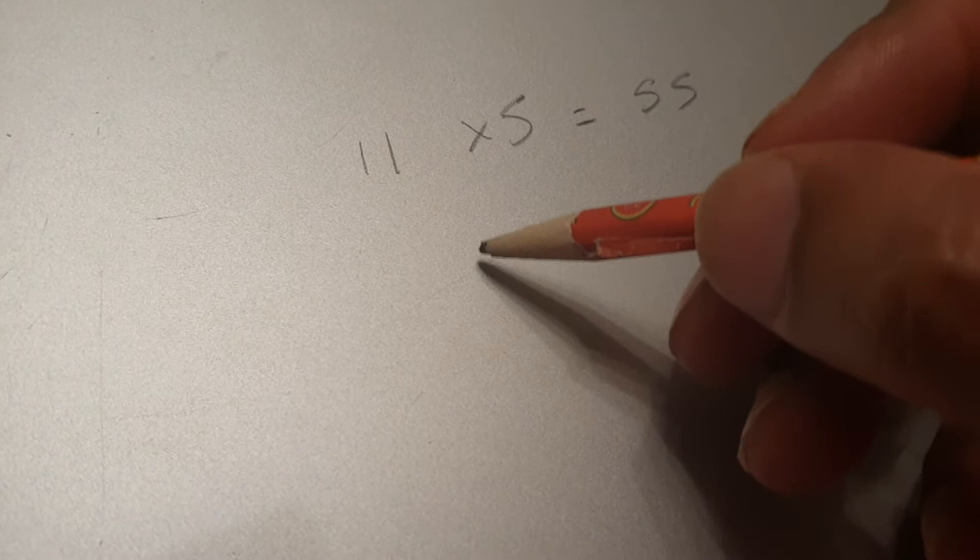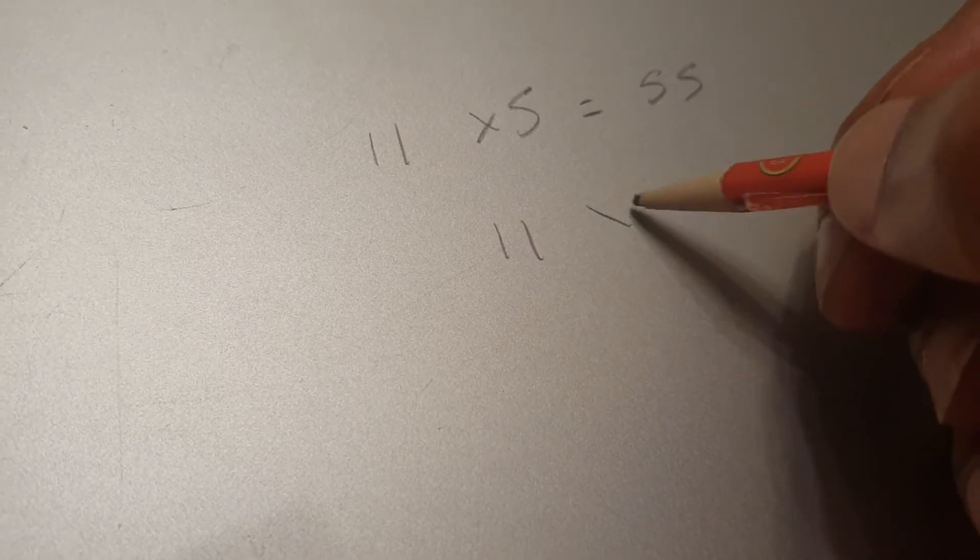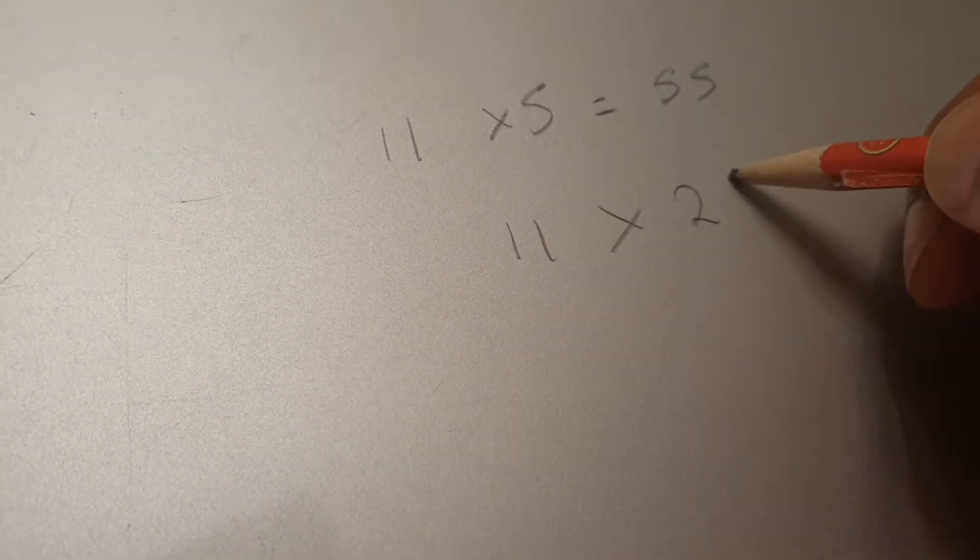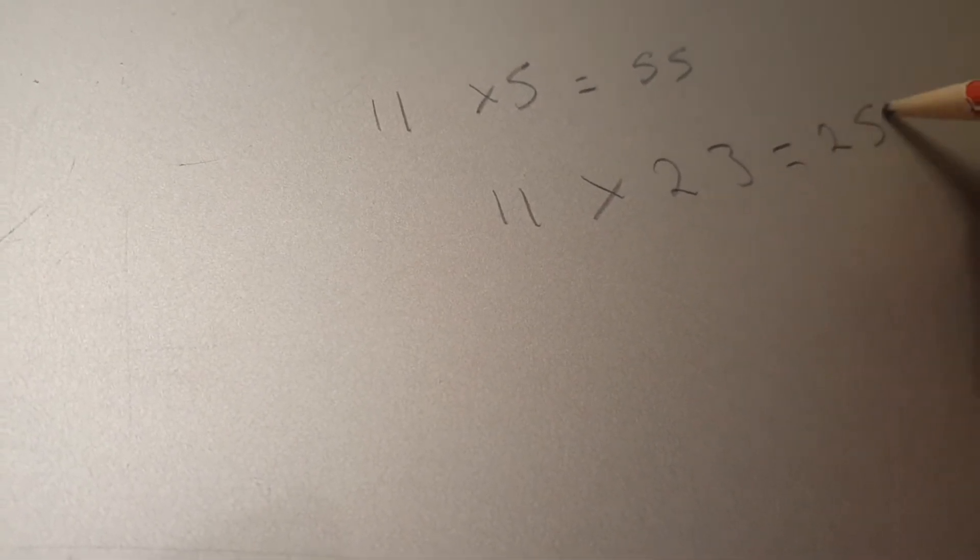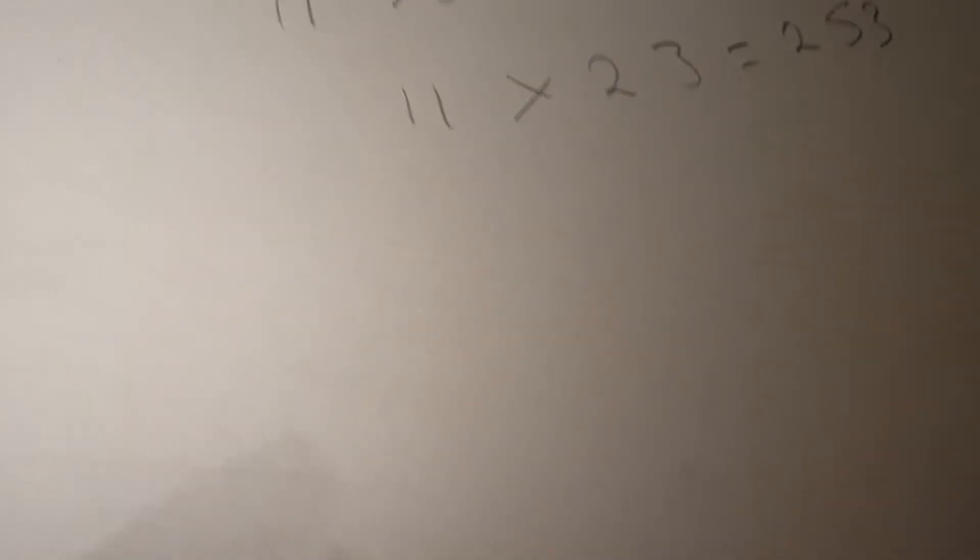So let's try a big sum. Here we go, 11 times 23. Maria, can you give me that? 253. Now Maria is only 8 years old, but she just did that sum exceptionally quickly.